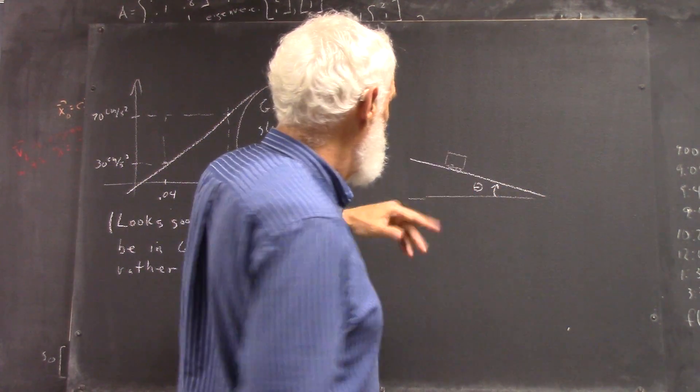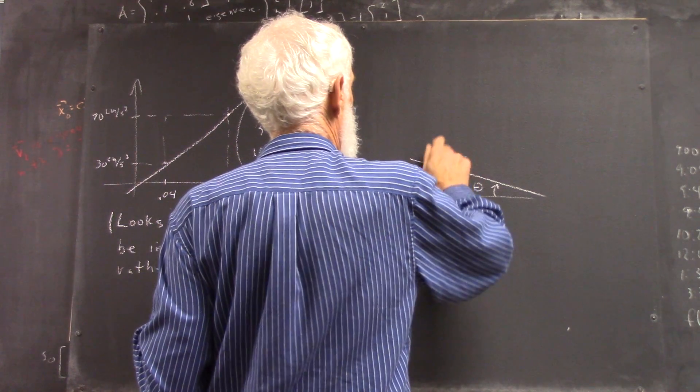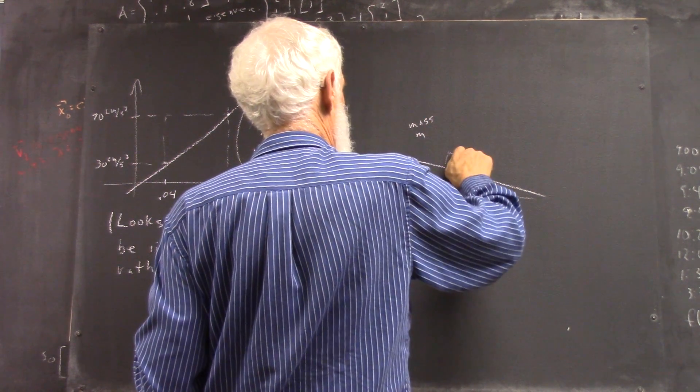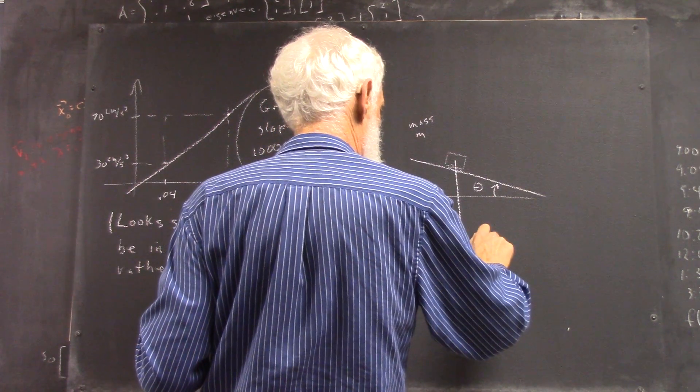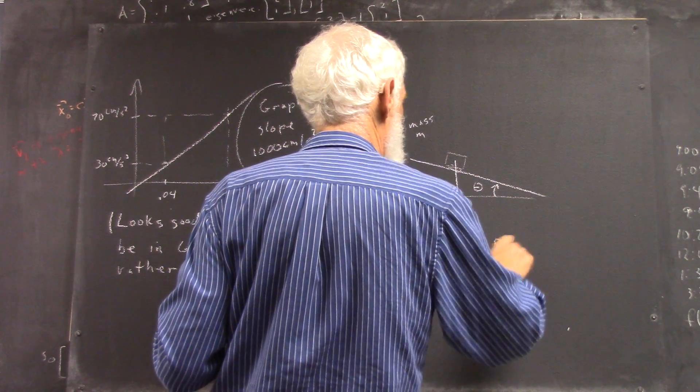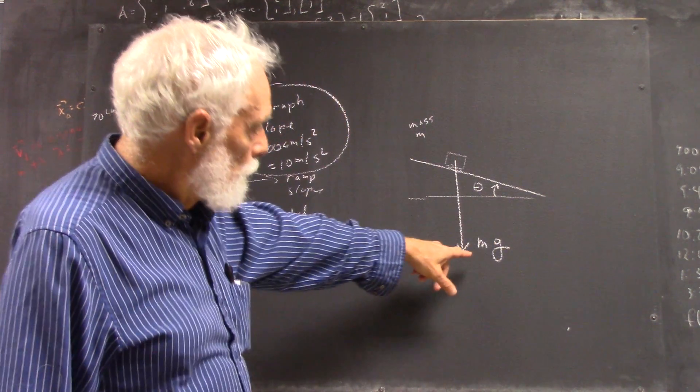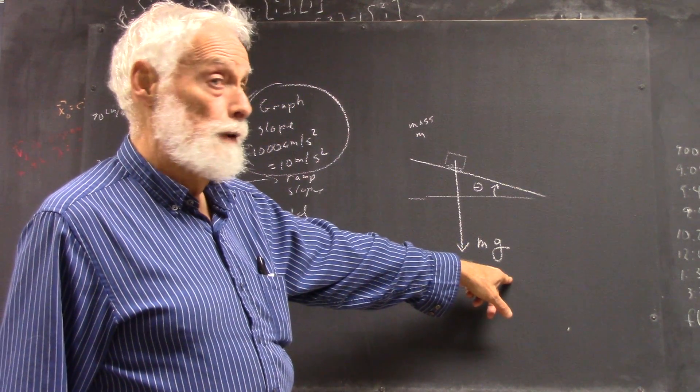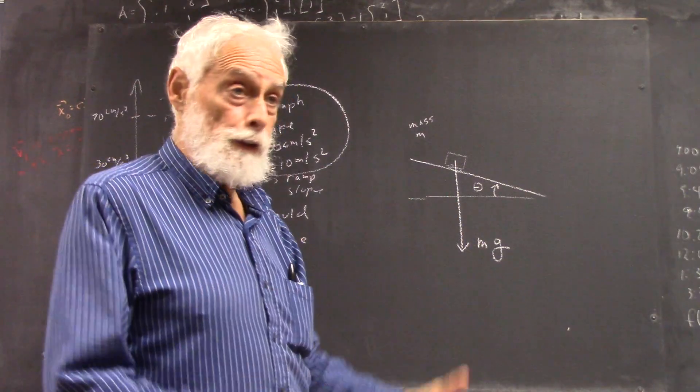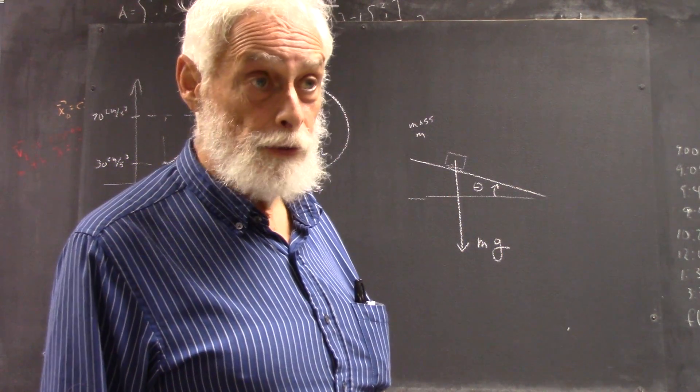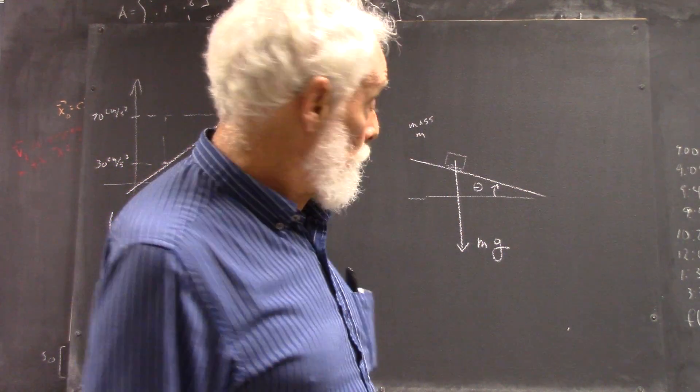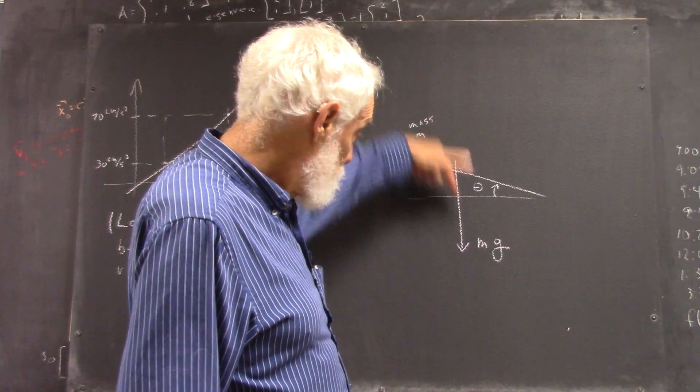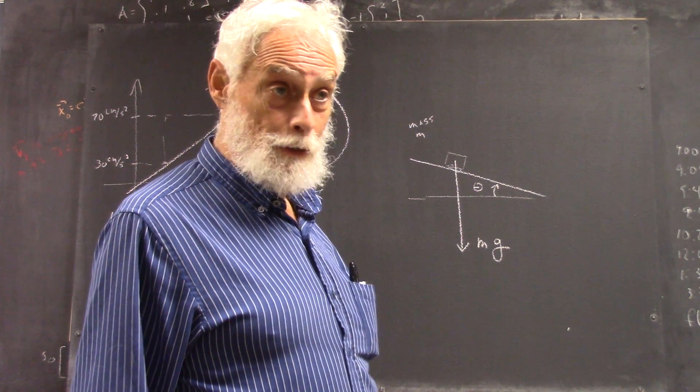Well, if we have an incline at angle theta and some mass here, the force exerted by gravity is mg. That's interconvertible if we understand Newton's second law of net force is mass times acceleration, right? Well, then the contribution of the gravitational force to the force in this thing is mg.